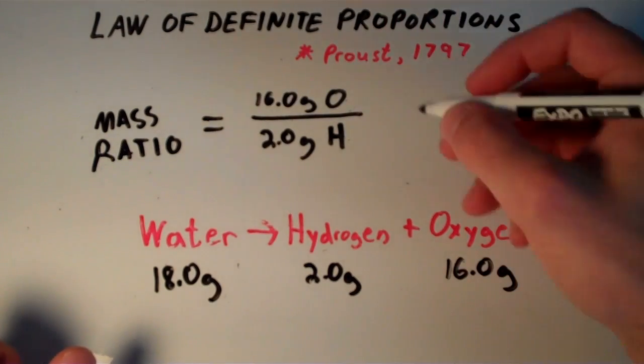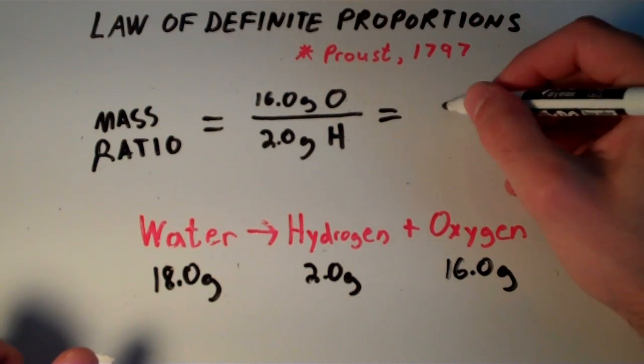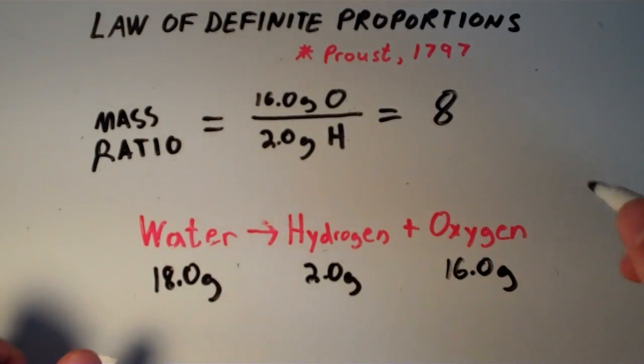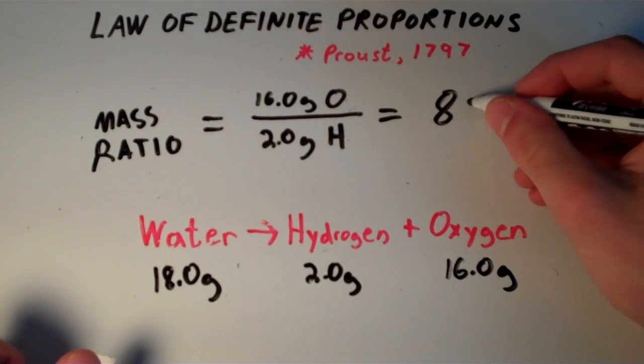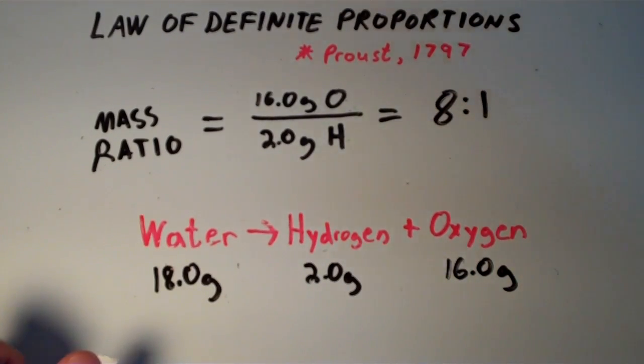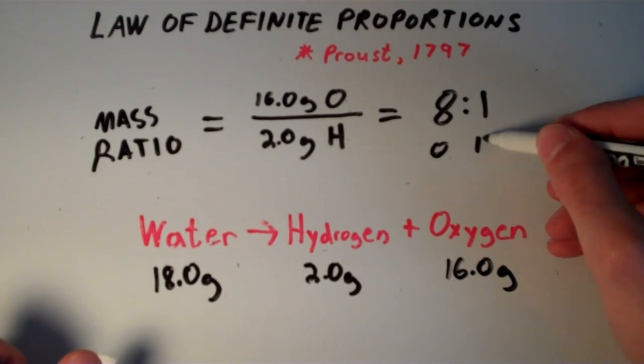16.0 divided by 2.0, well, that will just give us 8. We can also express this as a ratio and say that this is an 8 to 1 mass ratio of oxygen to hydrogen.